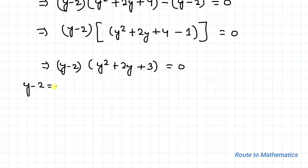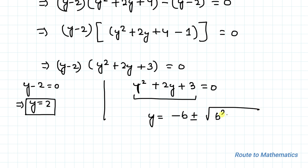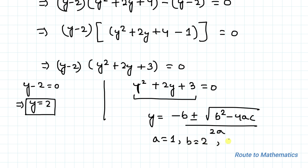From here we can write y minus 2 equals 0 and y² + 2y + 3 equals 0. So y equals 2 is one solution. For the quadratic equation, we apply the quadratic formula: minus b plus or minus root of (b² minus 4ac) divided by 2a. Here a equals 1, b equals 2, and c equals 3.